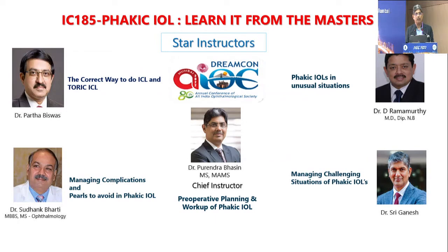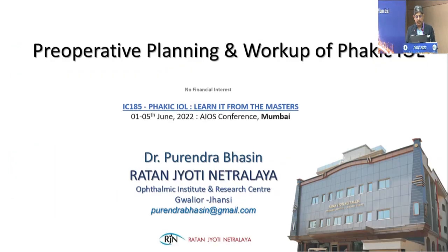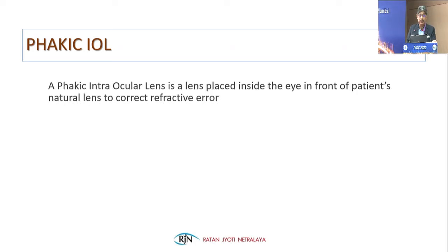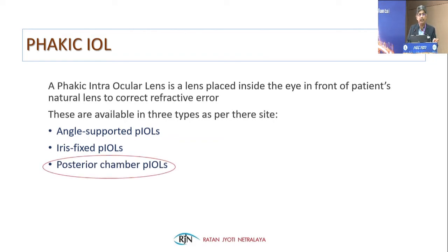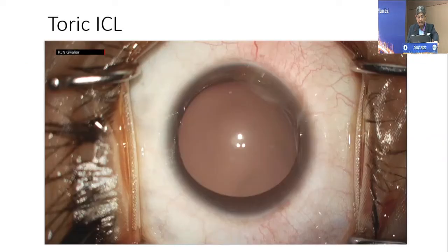All the faculty and instructors are very experienced with almost 20 years of doing phakic lens surgery. I myself have 18 to 19 years of experience. We started our journey with the very first phakic lens, which was a PMMA lens placed in the anterior chamber. Coming to the preoperative planning and workup of phakic lens — I have no financial interest. Phakic IOL is an intraocular lens placed inside the eye in front of the patient's natural lens to correct refractive error. These are available in three types: angle-supported, iris-fixated, and posterior chamber phakic lens.